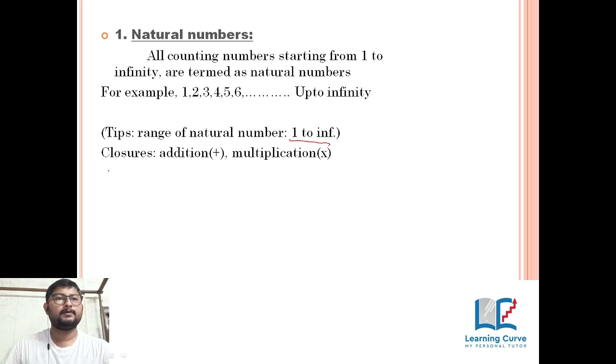Take the example of 10. 10 is a natural number, and 15. If we add these two numbers, 10 plus 15, what is the answer? The answer is 25. 25 is a natural number. For multiplication, 10 multiplied by 15, what is the result? 150. 150 is also a natural number.